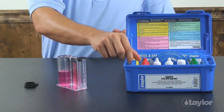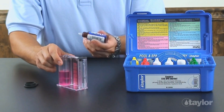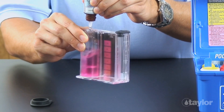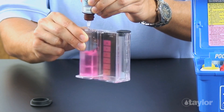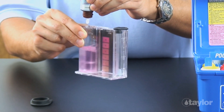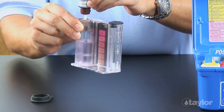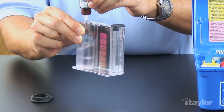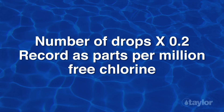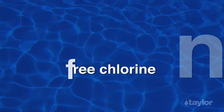Add reagent 871 for chlorine drop-wise, swirling and counting after each drop until the sample goes from pink to colorless. Multiply the drops needed to make the color change by 0.2 and record the result as parts per million free chlorine.